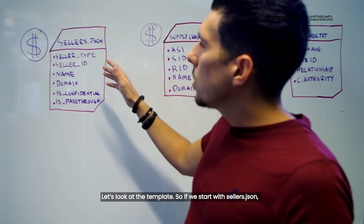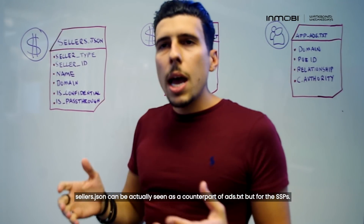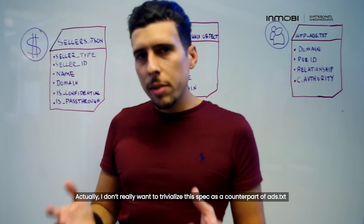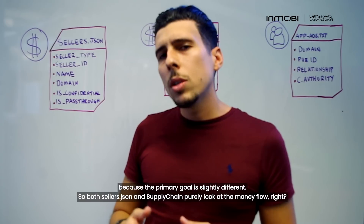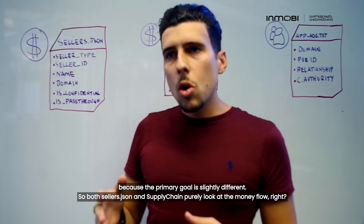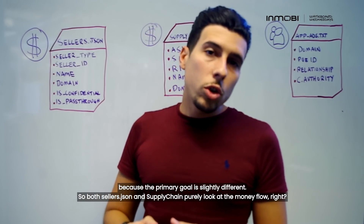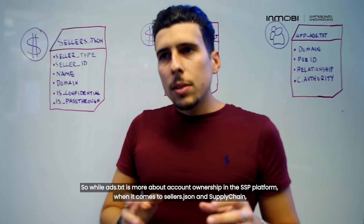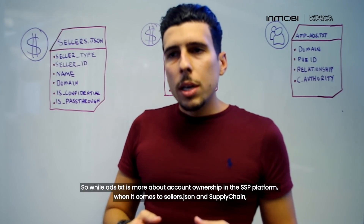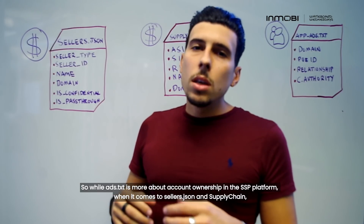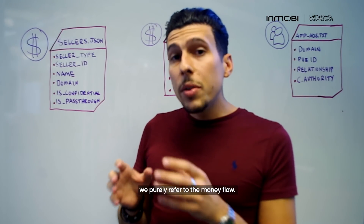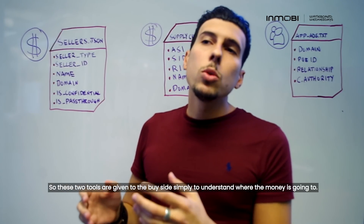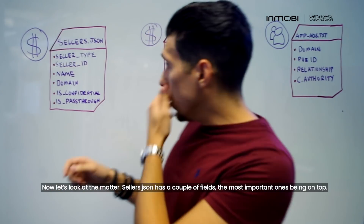Starting with sellers.json: sellers.json can actually be seen as a counterpart of ads.txt, but for the SSPs. I don't really want to trivialize this spec as a counterpart of ads.txt, because the primary goal is slightly different. Both sellers.json and supply chain purely look at the money flow. While ads.txt is more about account ownership in the SSP platform, when it comes to sellers.json and supply chain, we purely refer to the money flow. These two tools are given to the buy side simply to understand where their money is going.